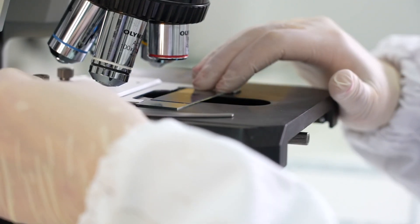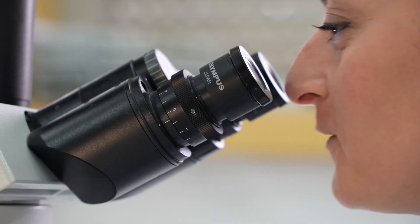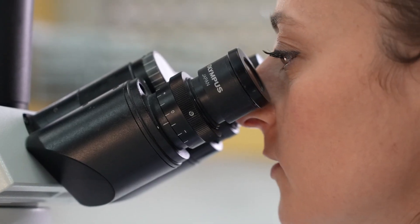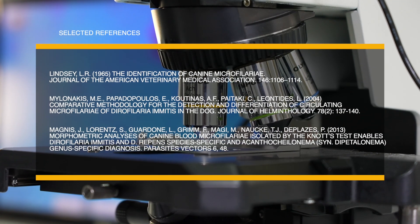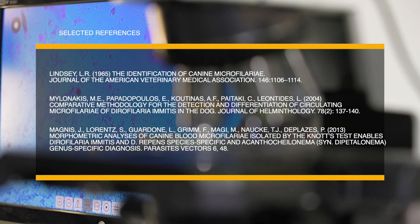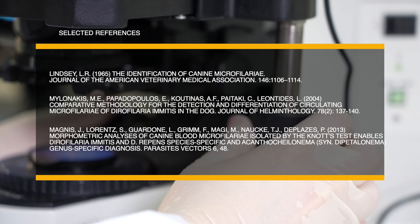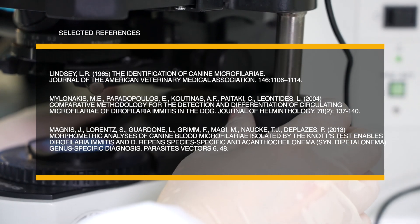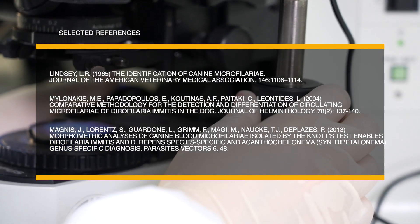If microfilaria are present, specific identification can be accomplished based on size, length and width, and morphological features of the anterior and posterior ends of the microfilaria. To see these features and obtain more precise measurements, 20x and 40x objectives are recommended.